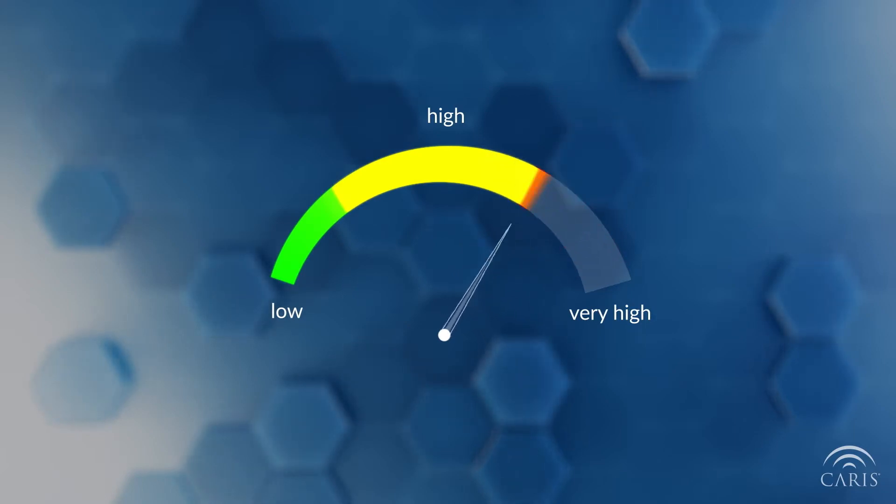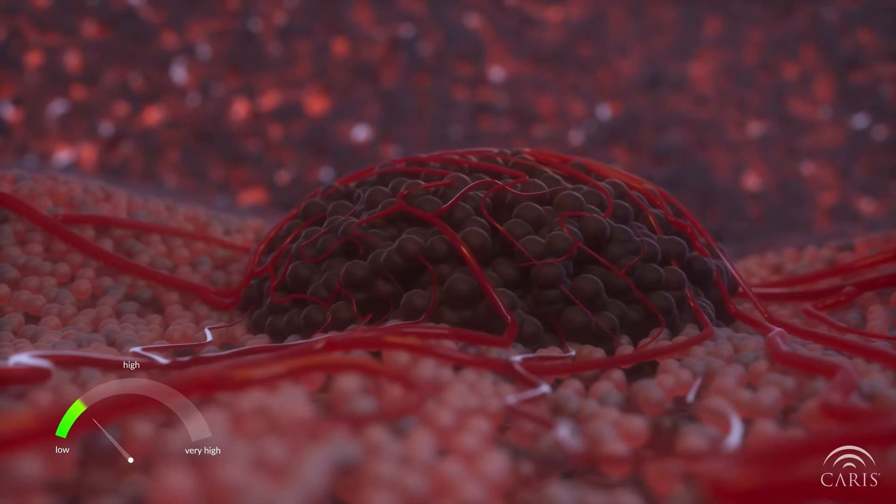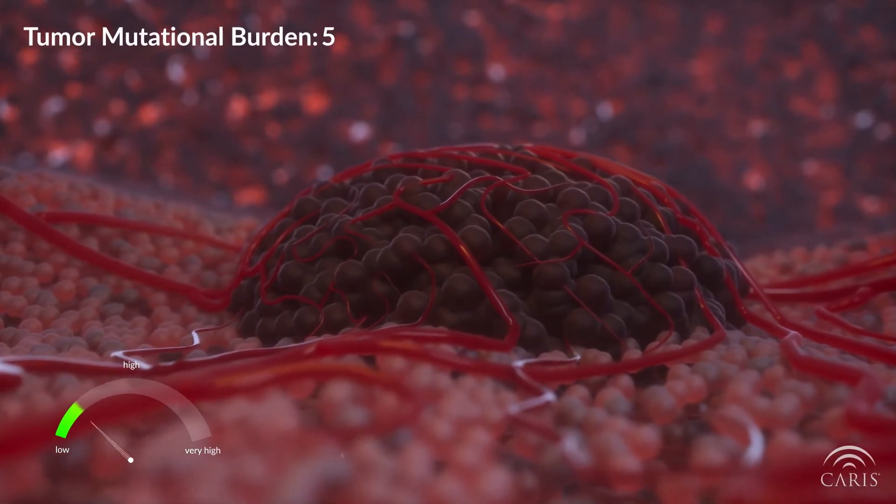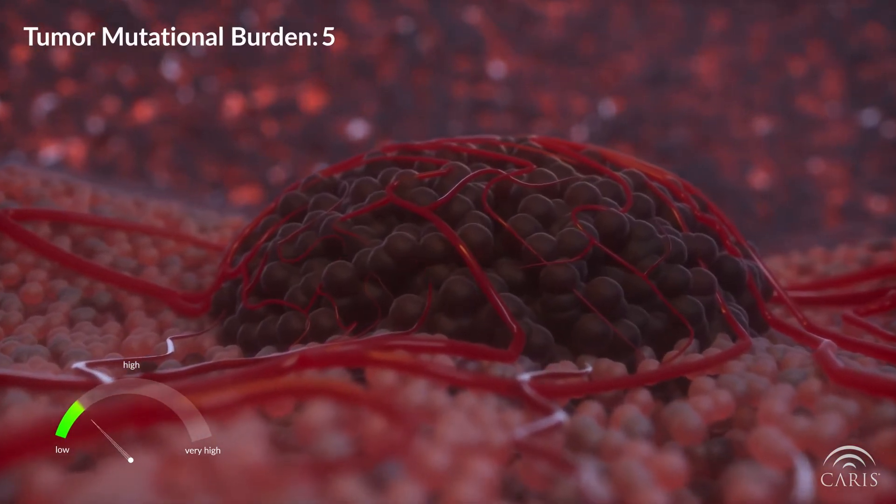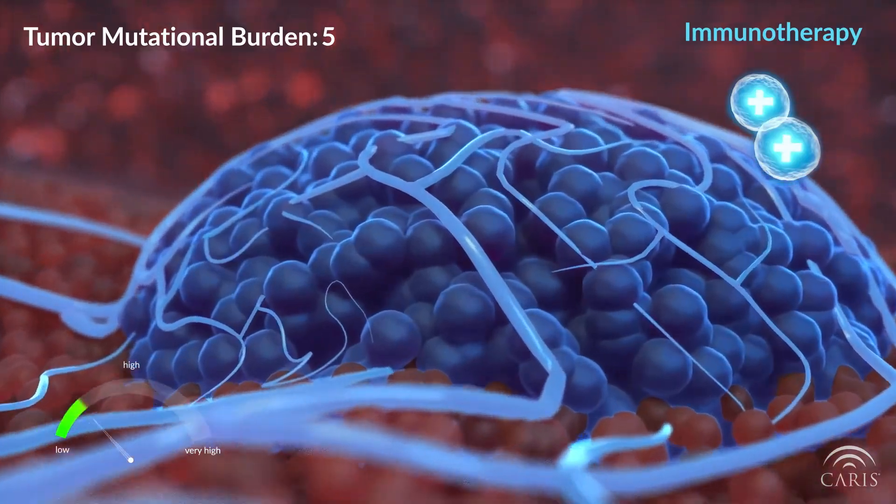TMB is measured on a scale to categorize it from low to very high. Knowing a tumor's TMB can be useful in predicting how cancer will respond to specific treatments like immunotherapy.